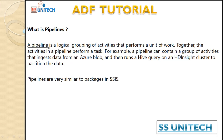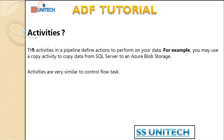So what is a pipeline? A pipeline is a logical grouping of activities. First, let's understand what an activity is. An activity in a pipeline defines the action to perform on your data — what action you want to perform on your data. For example, if you want to move data from your SQL Server to Azure Blob Storage, you can use the copy activity. This is one activity by which we can move data from any source to any destination, and it is very similar to the control flow task inside SSIS.